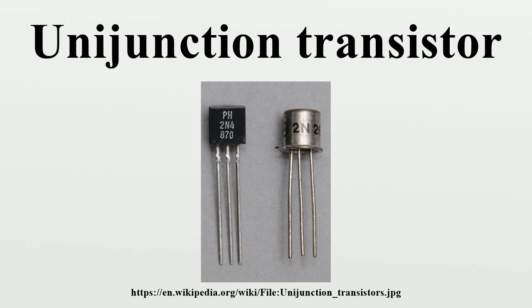The complementary unijunction transistor, or CUJT, is a bar of P-type semiconductor material into which N-type material has been diffused somewhere along its length. The 2N6114 model is one version of the CUJT.